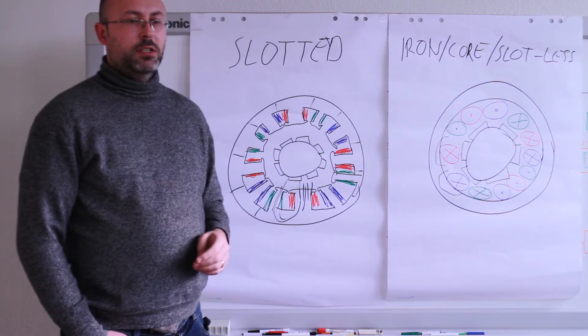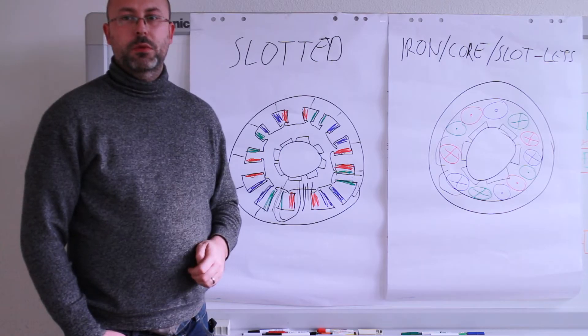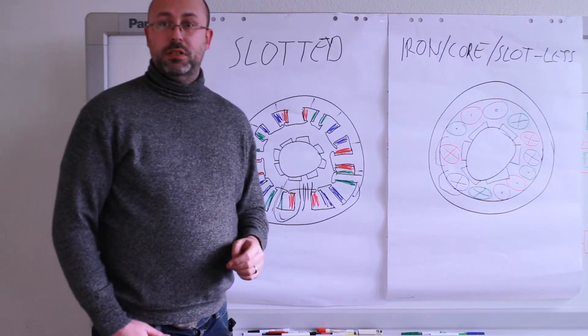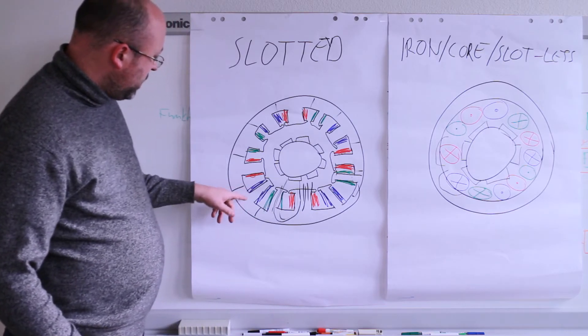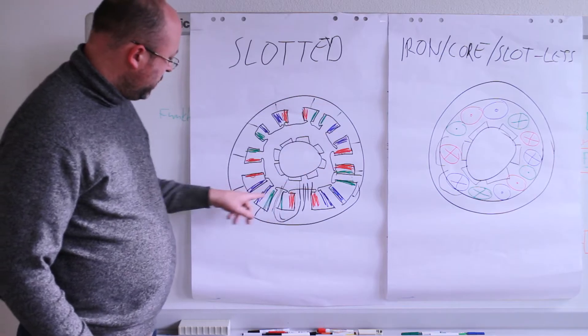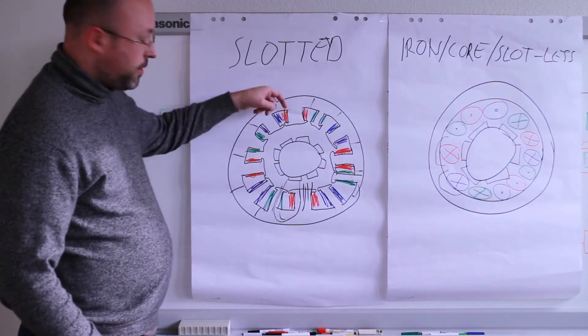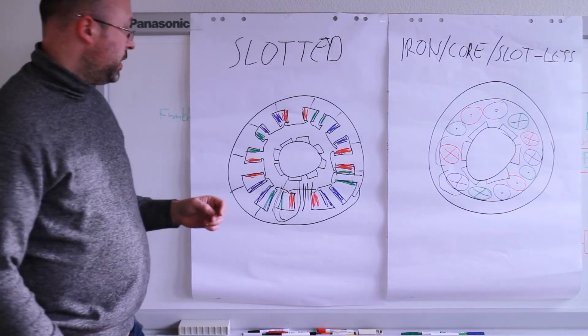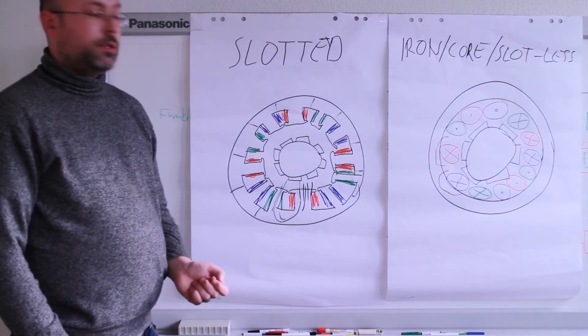So it's difficult to make an objective comparison of the two motor types. Let me first tell you about the design. The classic slotted motor has a stator which has teeth, and in between the teeth we have the slots. That's why we call it the slotted motor. Around each tooth we have the coil which is wound.